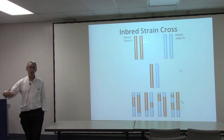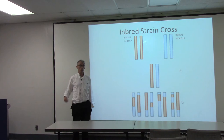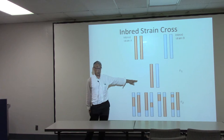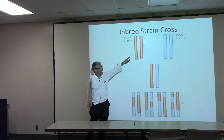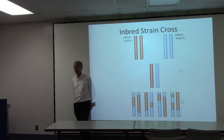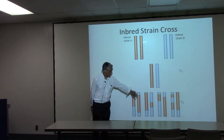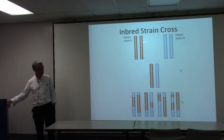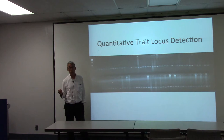Mouse geneticists always use inbred strains, and the standard design for mapping a complex trait is one where you have two inbred strains and you cross. The first generation is the F1, and then you can either cross the F1 back to the parental strains, or interbreed to produce an F2. To map, all you need are some markers to distinguish, on this set of chromosomes, whether they're homozygous or heterozygous. This used to be done by using PCR to amplify short polymorphic regions in the genome.